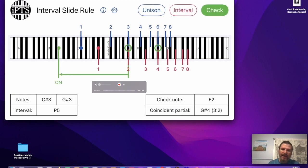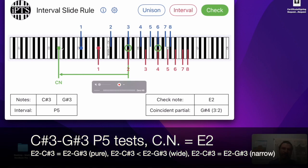Now, if you click on the check, look what happens. If you've got yourself a fifth, you've got the coincident partial, you also have the check note. So now the check note you use to measure the size of the fifth. So you would play the E here with the C sharp, and then you would play the E with the G sharp. And those are your intervals that you would play to determine the size of the fifth.